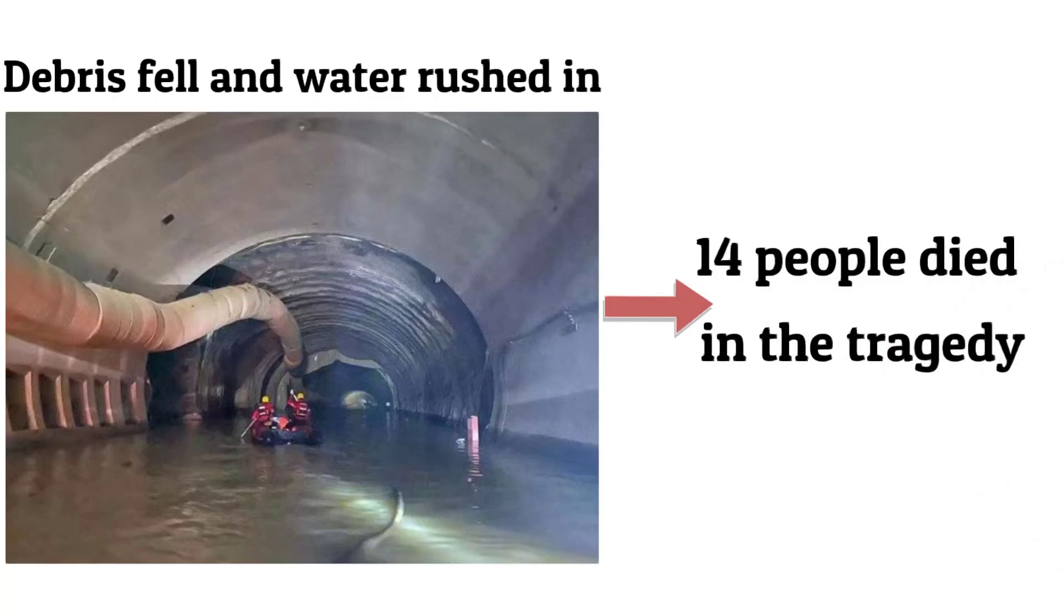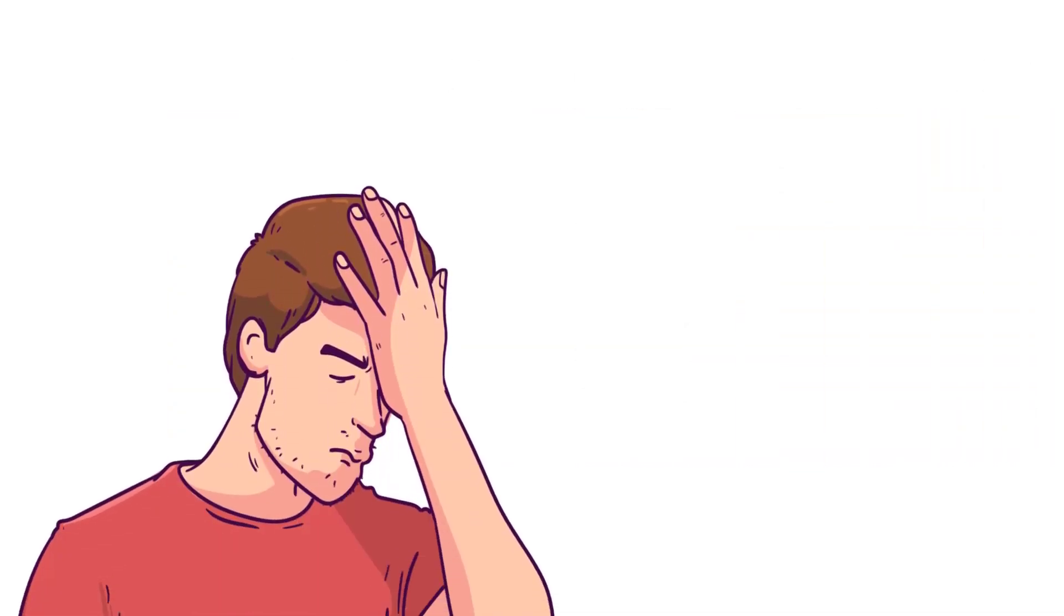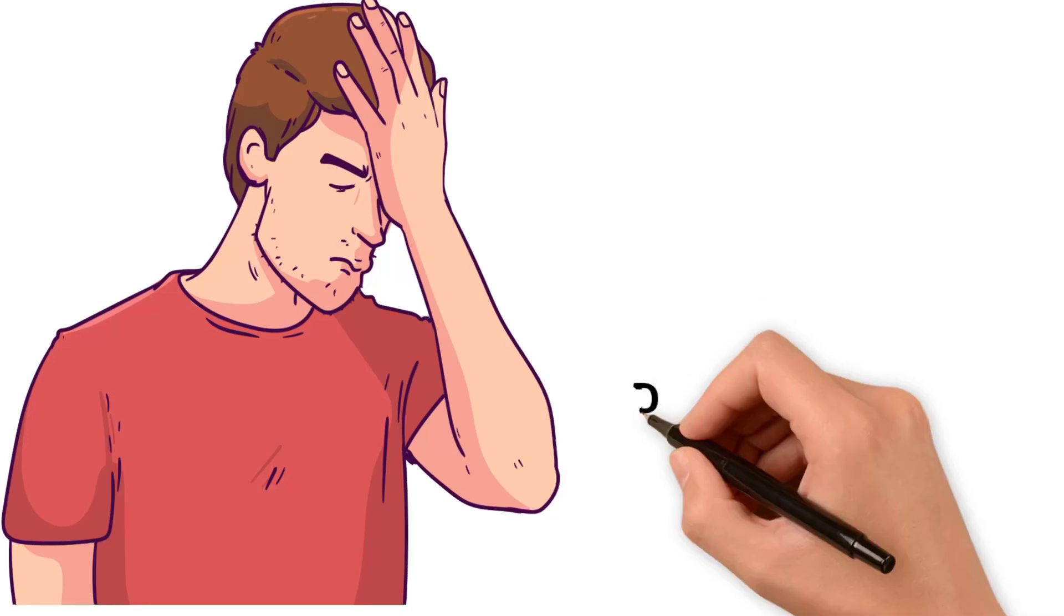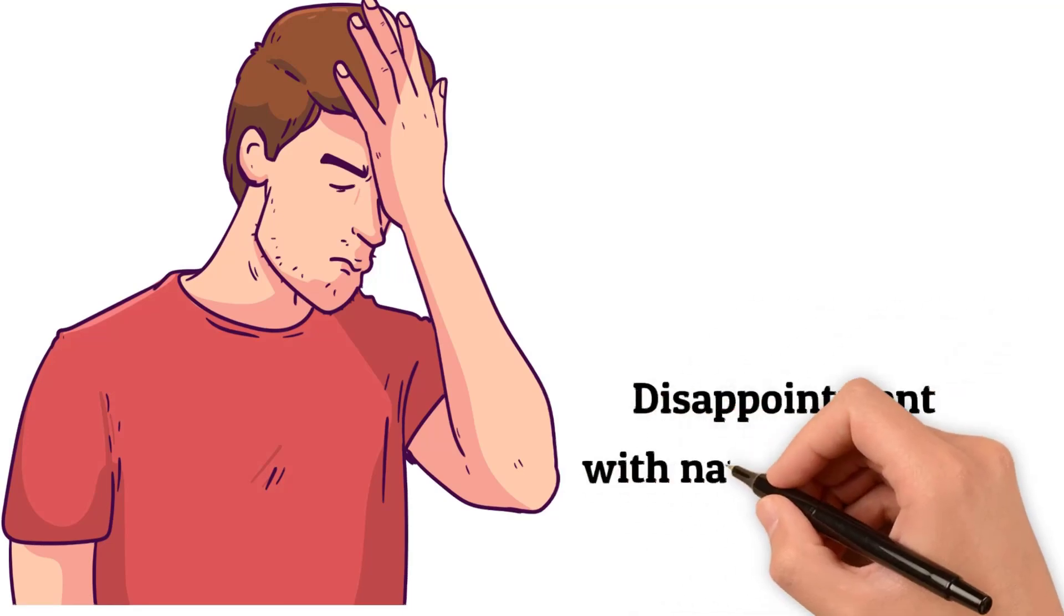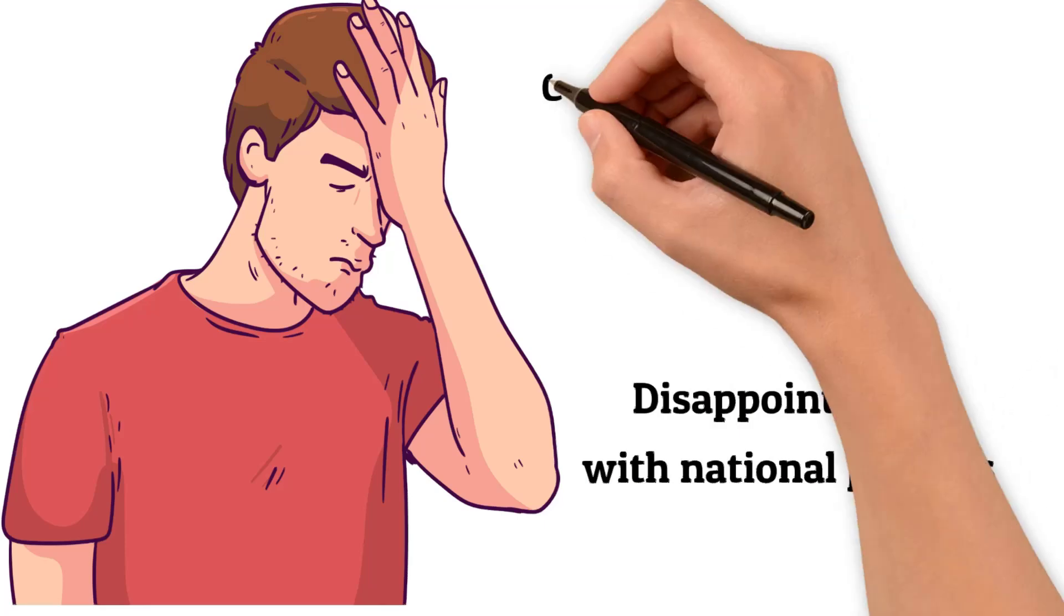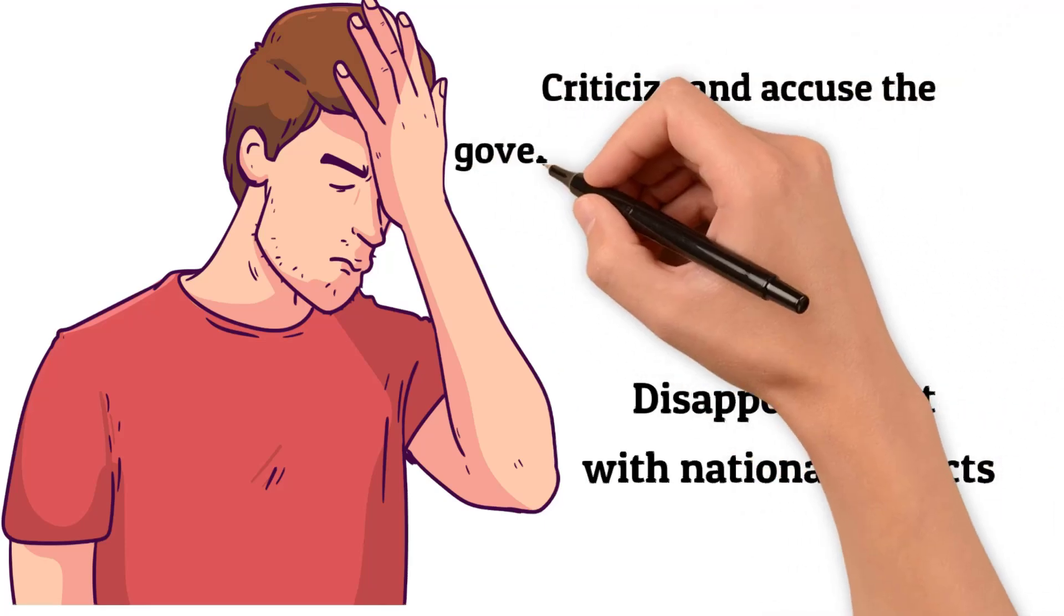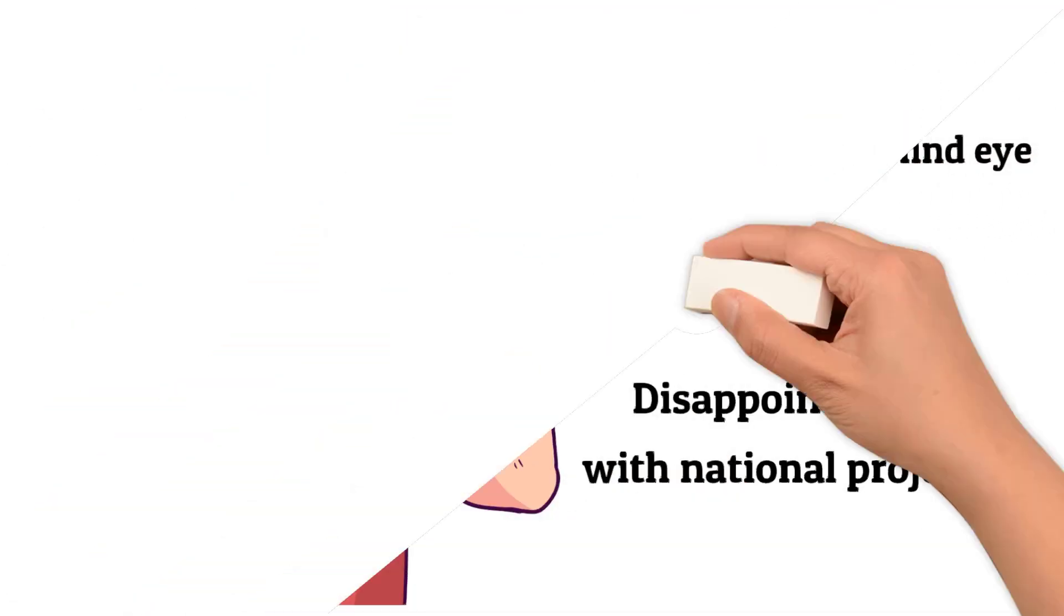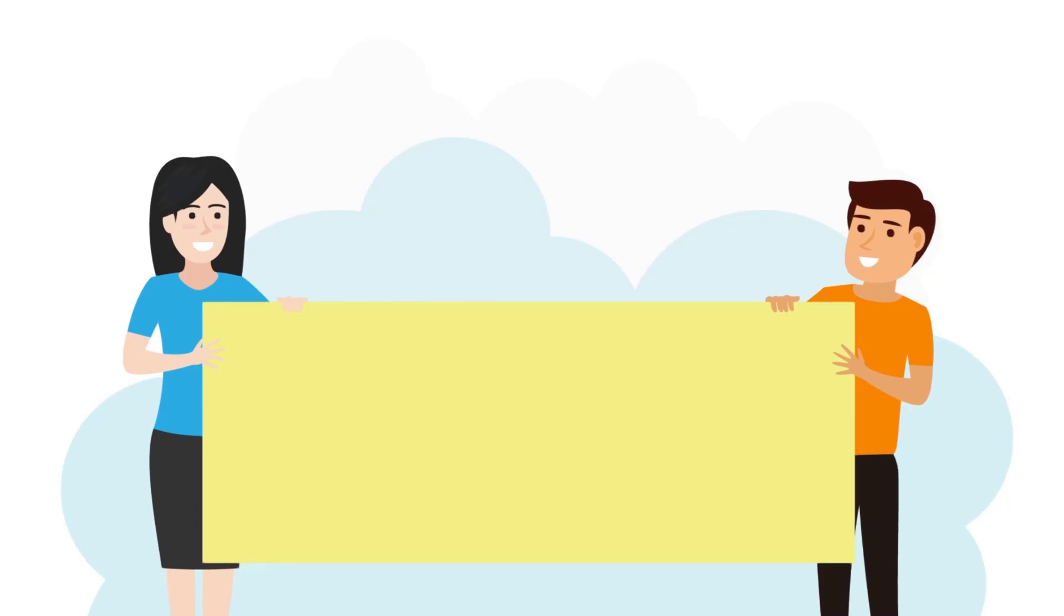Since then, attention and criticism has been directed at China 2nd Railway Group, the construction unit responsible for the construction of the Shijingshan Tunnel. The incident has caused significant disappointment from the people, who are expressing disappointment in national projects. There is even criticism being directed at the government, accusing it of turning a blind eye to projects that are of poor quality and potentially endanger people's lives.